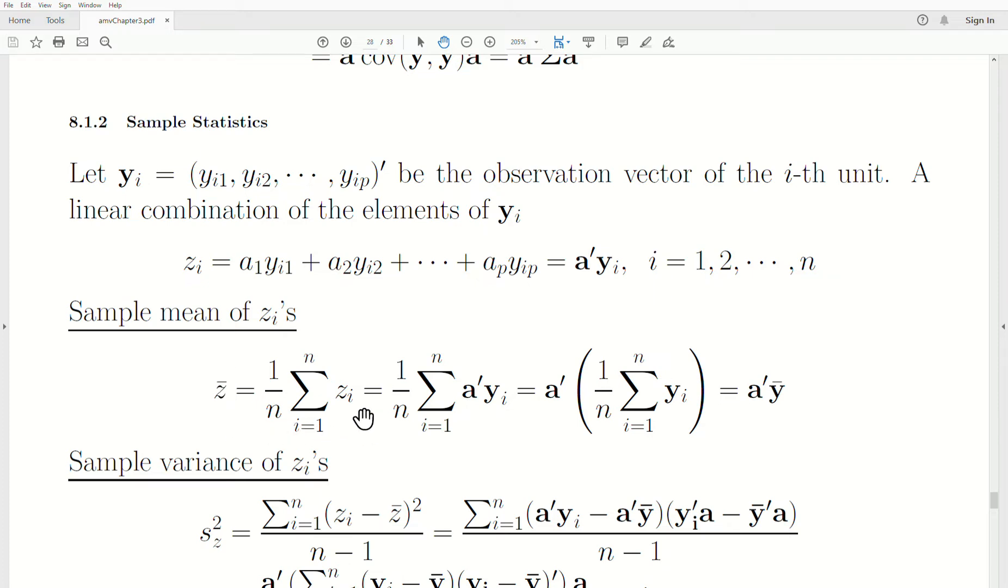We can take the sample mean of the Z's. So, that's just represented by Z bar, which is the sum of the Zᵢ's divided by N. Then, if we replace what the Zᵢ's are, which is this vector product, A transpose Yᵢ. Now, this constant vector can be taken out of the sum like this. But, the sum of the Yᵢ divided by N is that sample mean vector. So, then we have A transpose Y bar. That's the sample mean of the Z's.